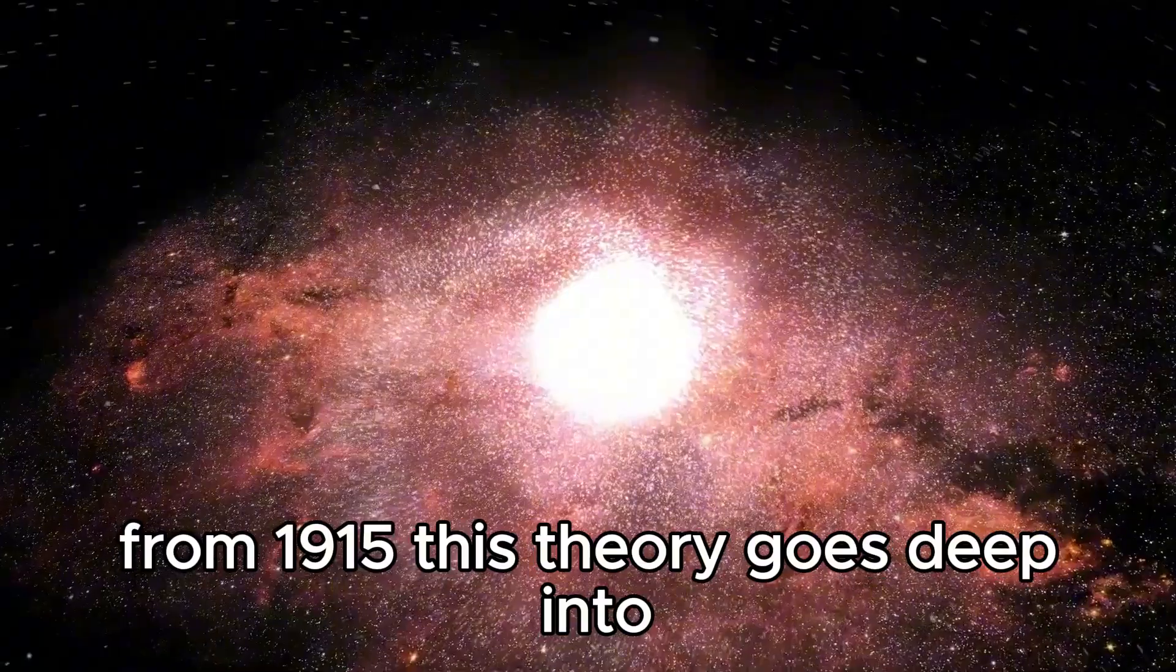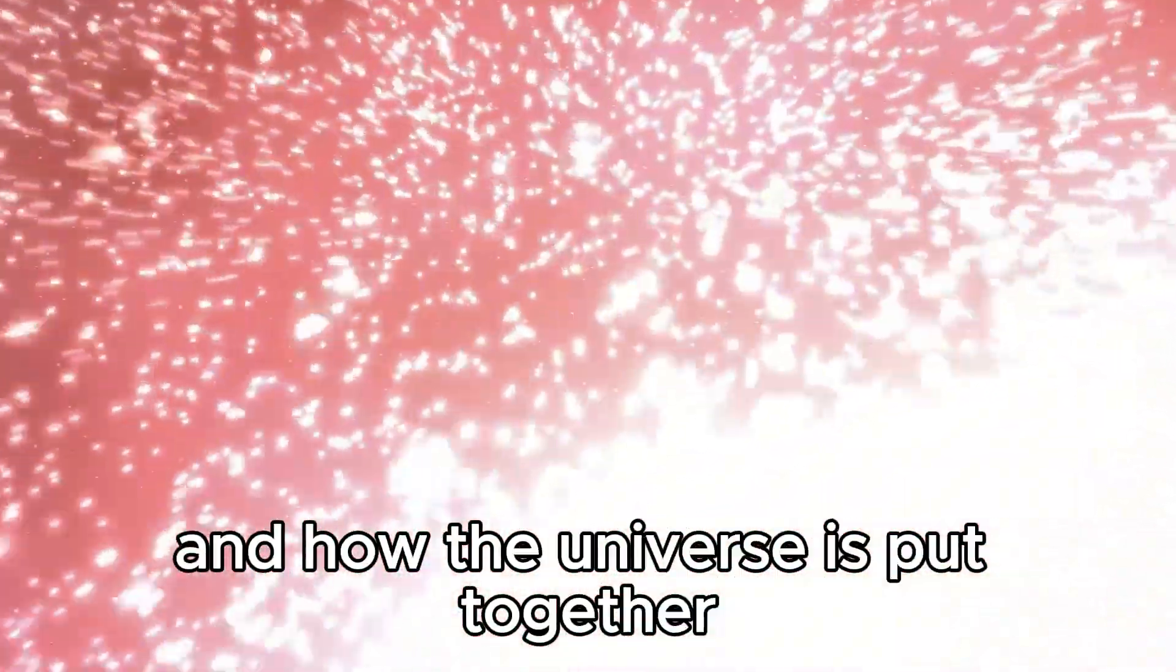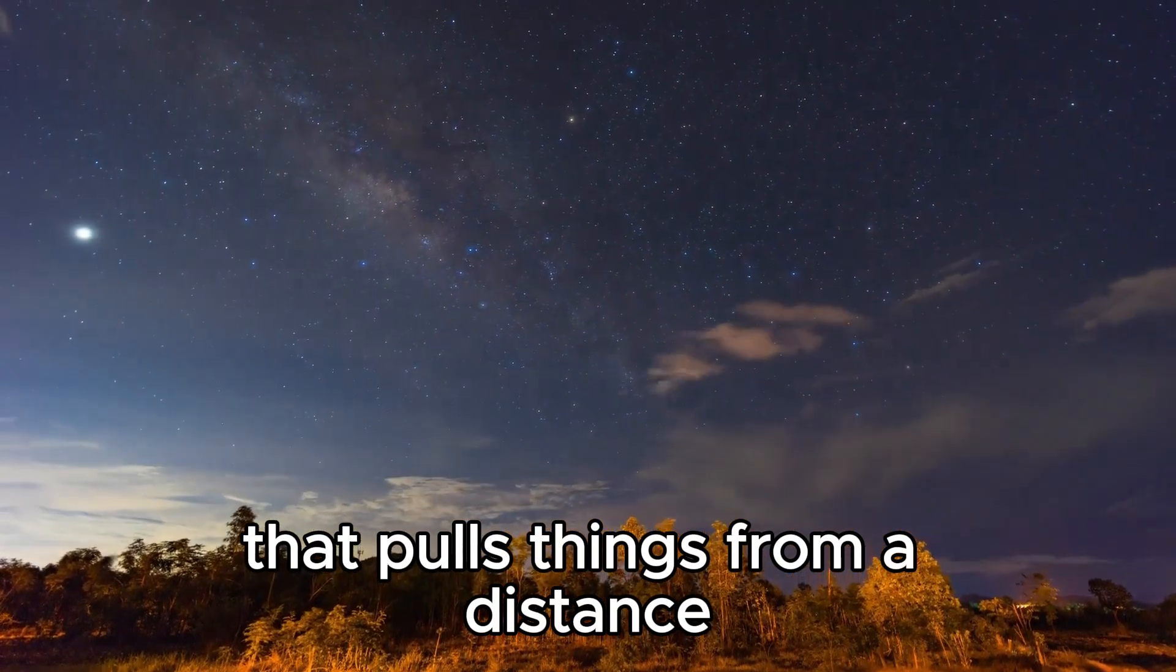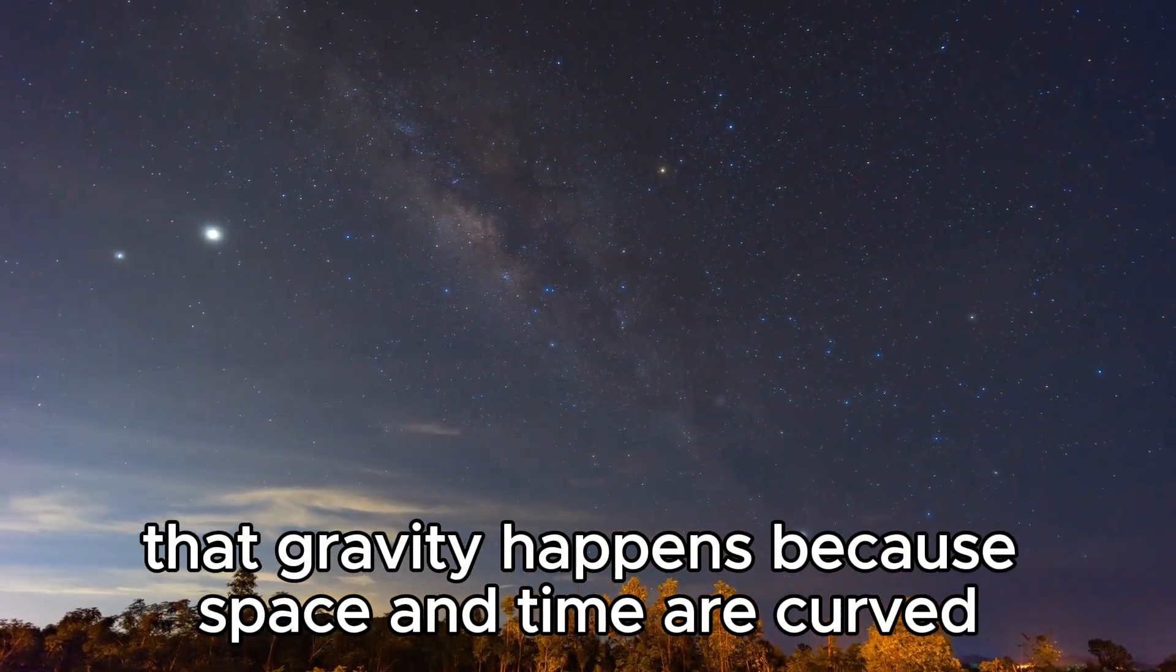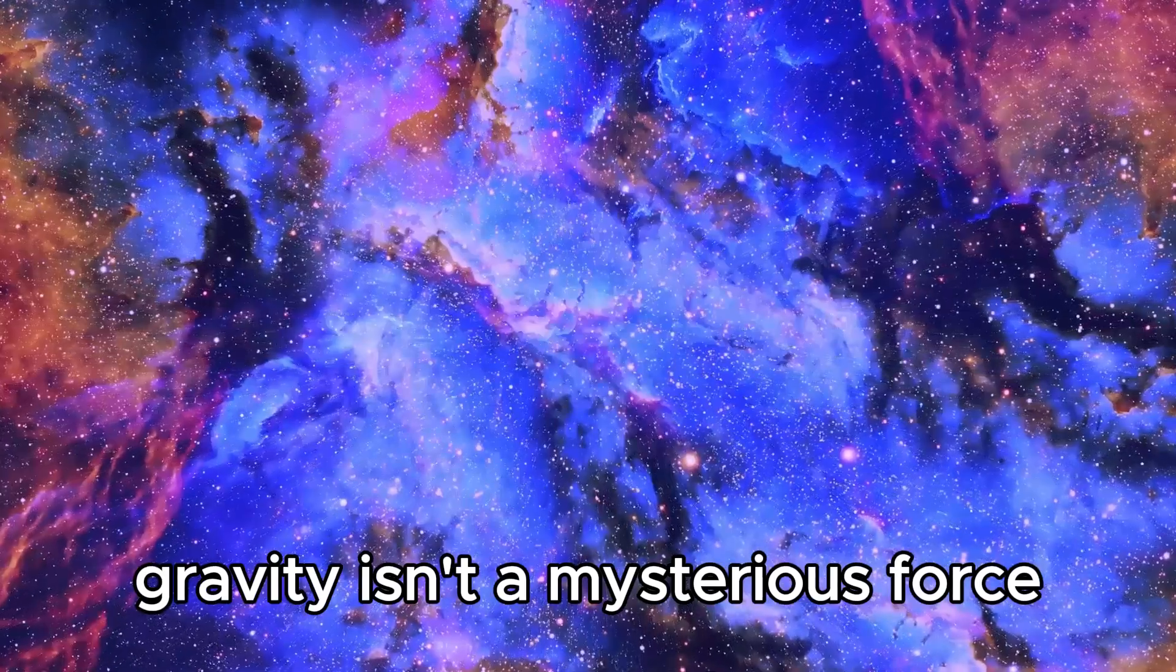But there's more. Enter Albert Einstein's general theory of relativity from 1915. This theory goes deep into the relationship between gravity and how the universe is put together. It shakes up the old idea that gravity is just a force that pulls things from a distance. Instead, it tells us that gravity happens because space and time are curved or bent. It's like saying, hey, gravity isn't a mysterious force.